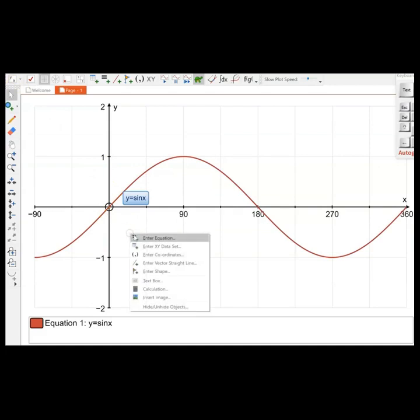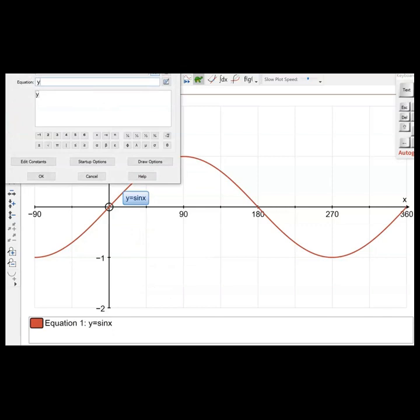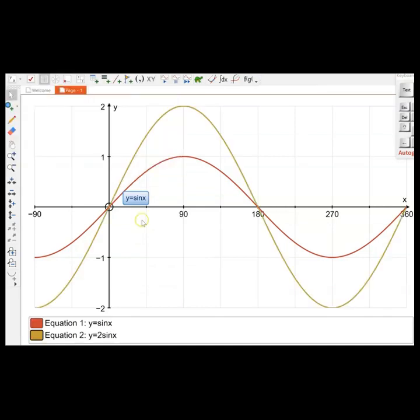To show the transformation, this is a stretch. When you have a stretch, you put a constant before the function. In this case we have y equals 2 sine x. The amplitude has been stretched two units up, and that's the scale factor of 2.